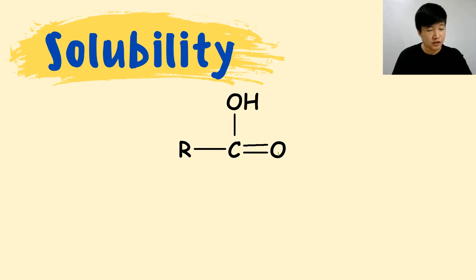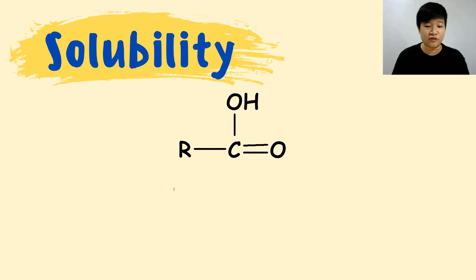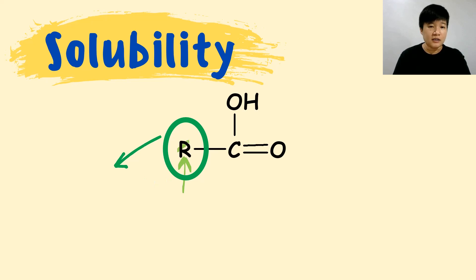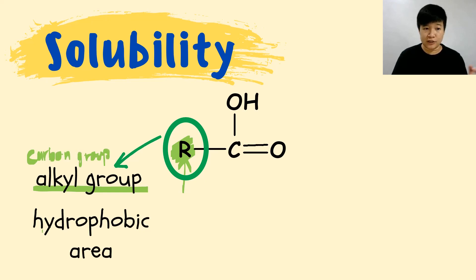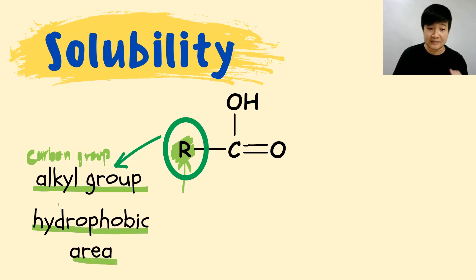In your carboxylic acid RCOOH, we have two areas — one hydrophobic and one hydrophilic. The first one is your R group, which is your alkyl group — all your carbon groups. Your alkyl group is the hydrophobic area, which means it is the area that hates water.